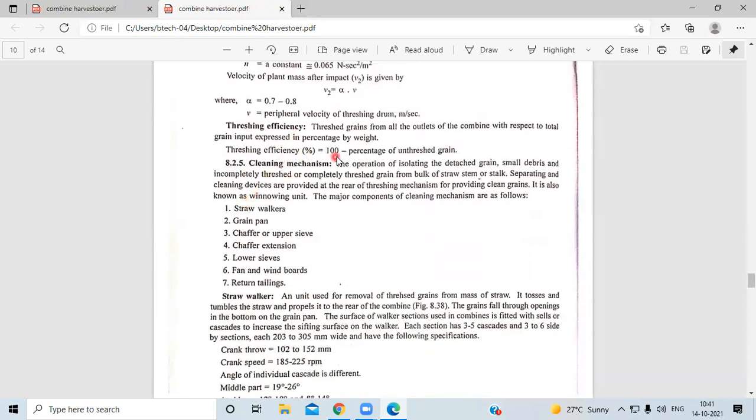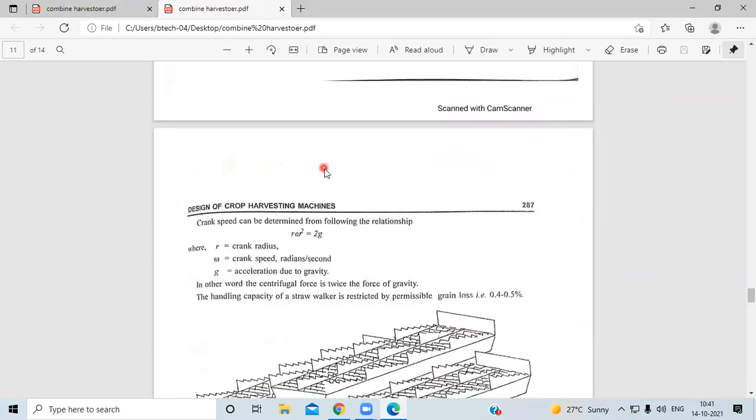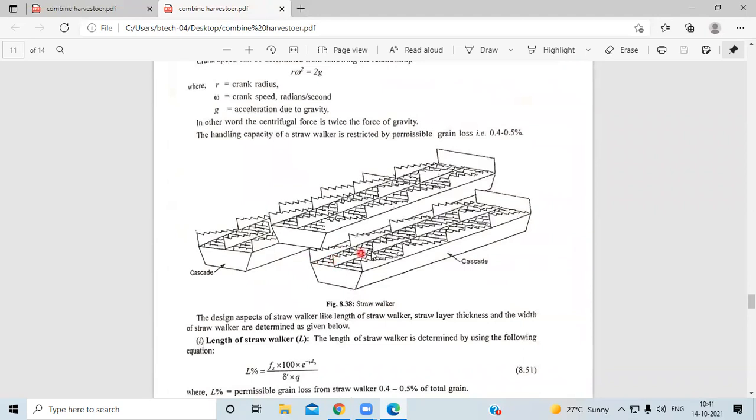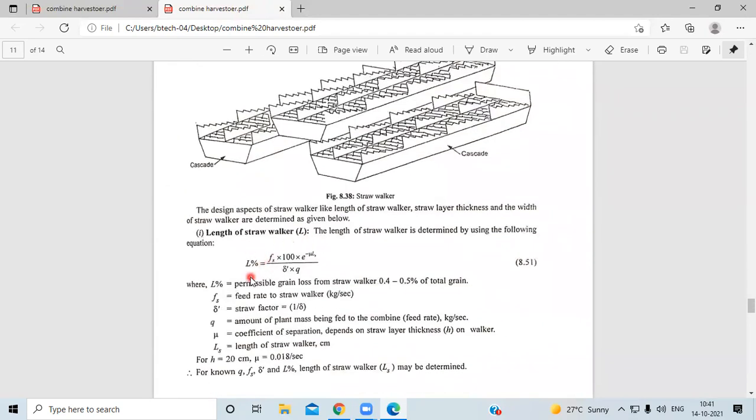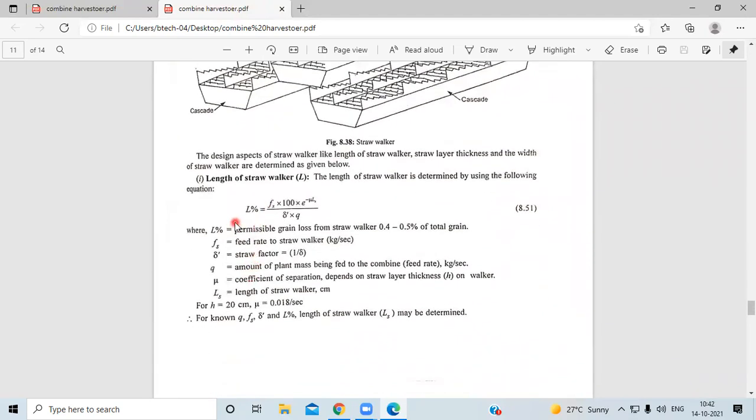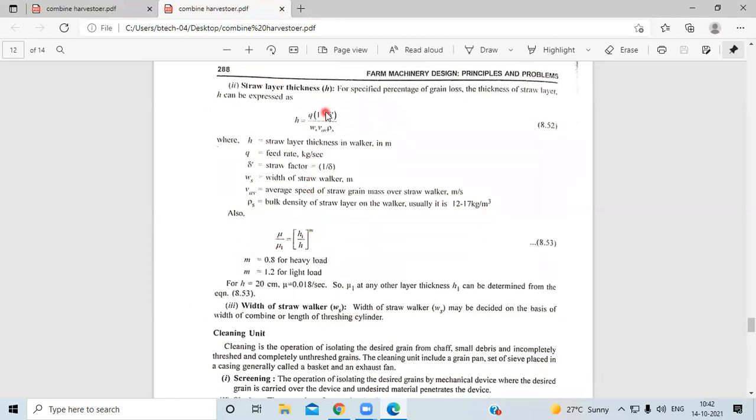Next, the threshing efficiency is determined by 100 minus percentage of unthreshed grain. Next is the cleaning mechanism. Cleaning mechanism includes straw walkers. Length of the straw walker is determined using this formula: L percent equals Fs times 100 into Es minus EU divided by LS times delta dash times Q. Then straw layer thickness H equals Q times 1 minus delta dash divided by WV times VM times rho S.